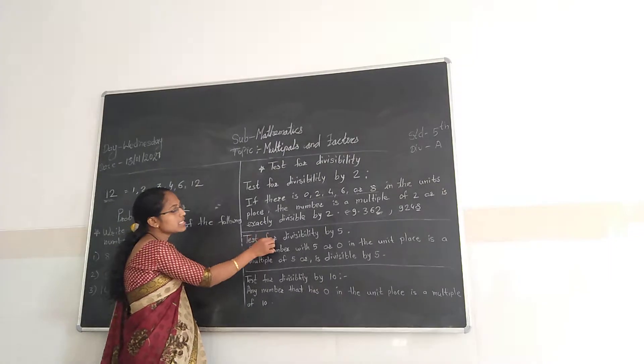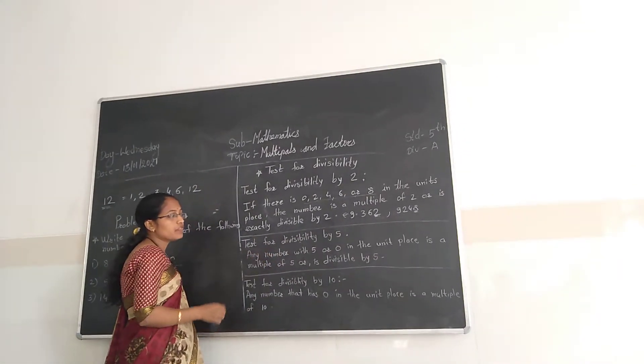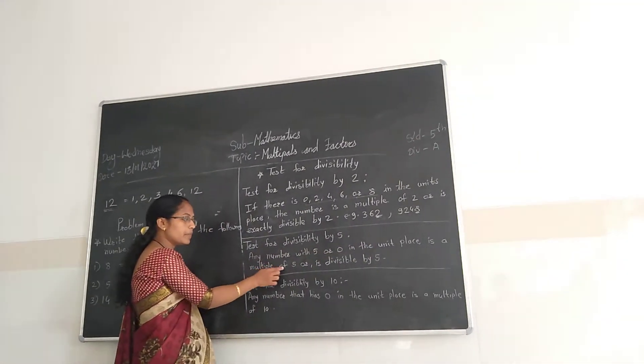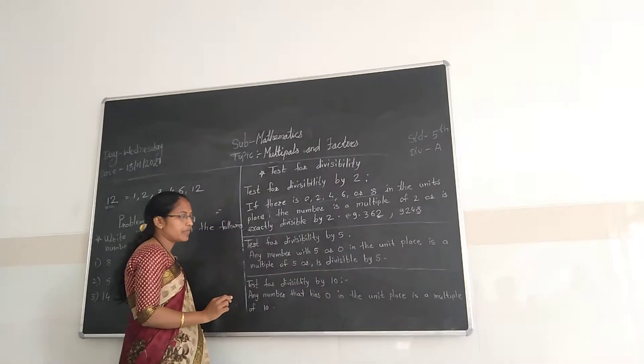Next, test for divisibility by 5. Any number with 5 or 0 in the unit place is a multiple of 5 or divisible by 5.